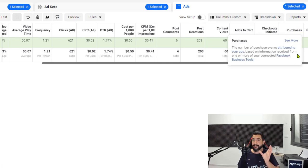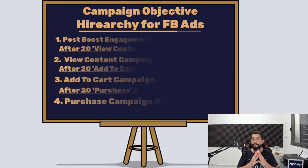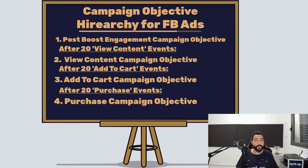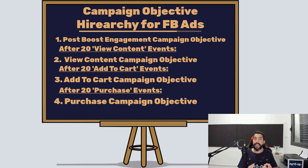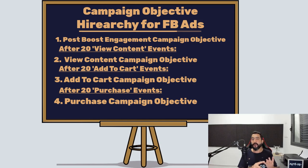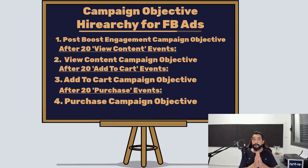The next step is once you get at least 20 purchases, you can create a purchase campaign. This is usually the most expensive campaign to run, and that is why we had to build it slowly and gradually starting from post boost engagement. After 20 view contents, we created a view content campaign. Then once we had 20 add to carts, we created an add to cart campaign. Once you have 20 purchases from your add to cart campaign, that is when you're going to run a purchase campaign. Your Facebook pixel at this point will be truly fed with the right audiences, and it will keep optimizing itself. That is where you are going to start seeing real sales and real profits.